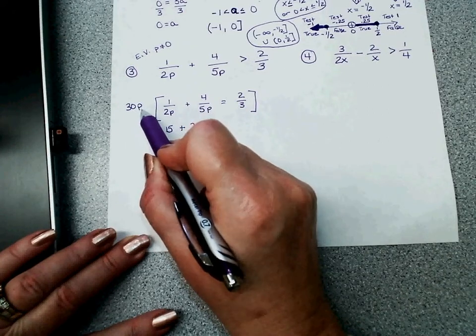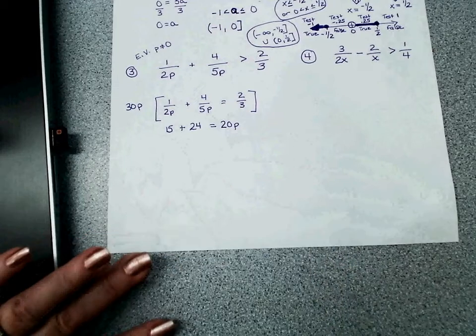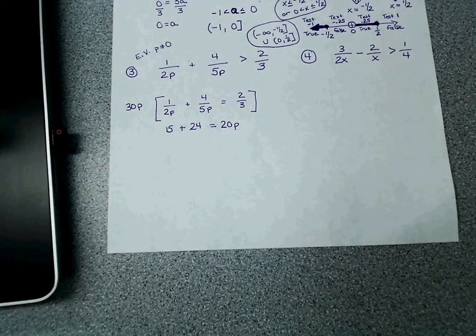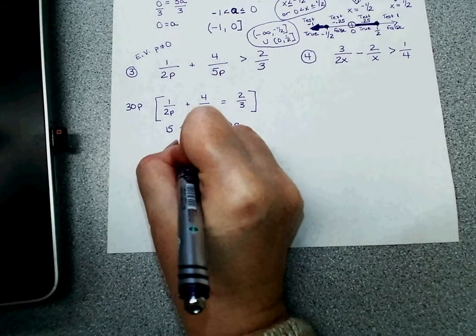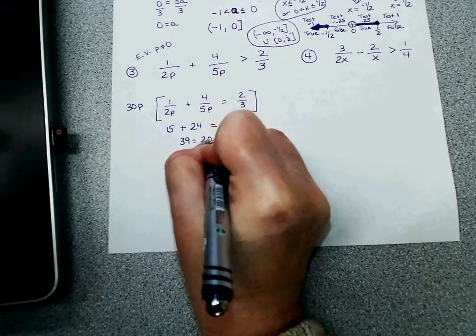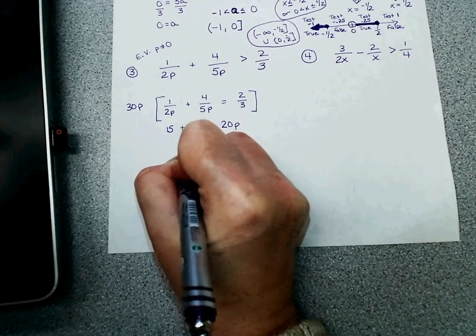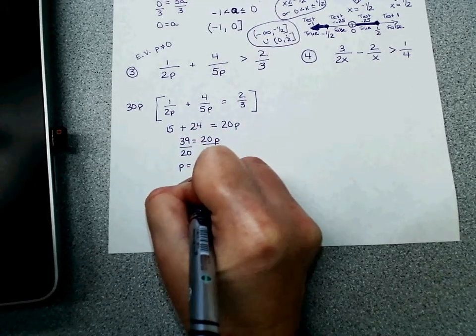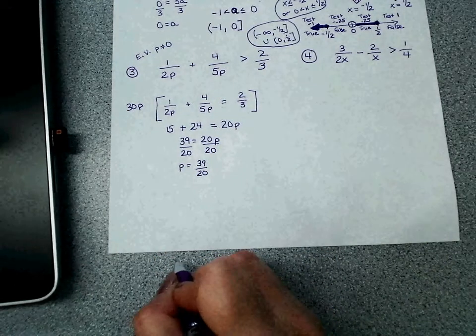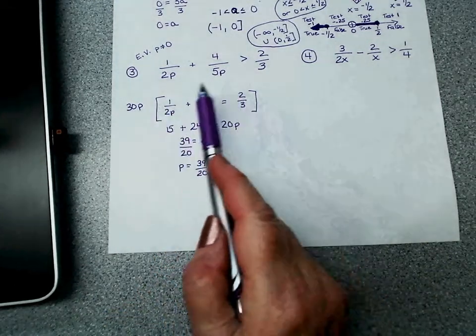So 15 plus 24 equals 20p. Combine like terms: 39 equals 20p. Divide both sides by 20. P equals 39 over 20. Now I know that's a weird answer, but it is correct. If you stored it on your calculator and checked it in this equation, it would be true.